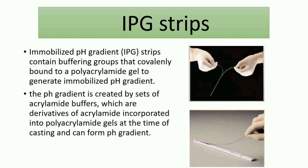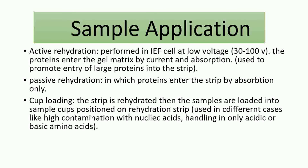The IPG strips must be hydrated and the sample is applied and absorbed into them. There are multiple forms of sample application: active rehydration, in which a low voltage is applied to increase absorption ability and promote entry of large proteins into the strip; passive rehydration, which depends on adsorption properties without any electric field; and cup loading, in which the strips are rehydrated first and then samples are loaded into a specific position on the rehydration strip.